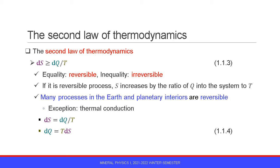Many processes in the Earth and planetary interiors are reversible. The typical exception is thermal conduction. In most cases, the process is reversible, and therefore the equality is held: the differential of entropy dS is equal to dQ over T. This equation can be written as dQ is equal to T dS, equation 1.1.4.